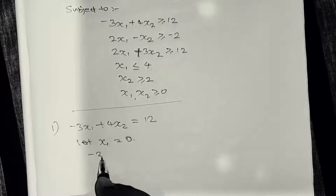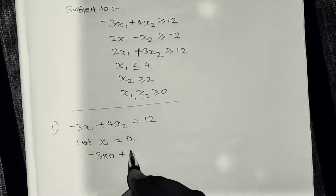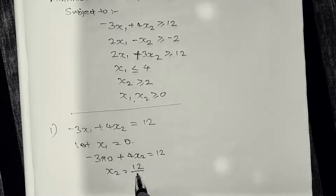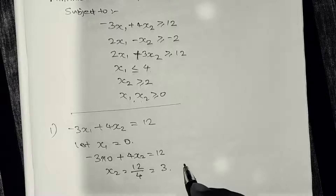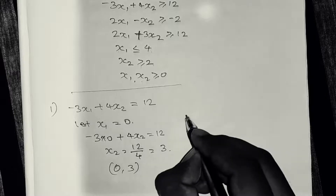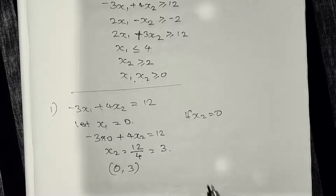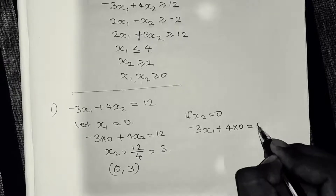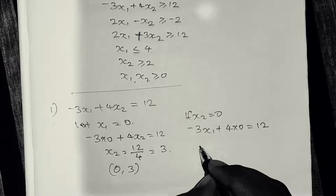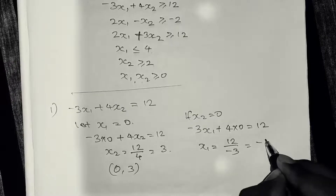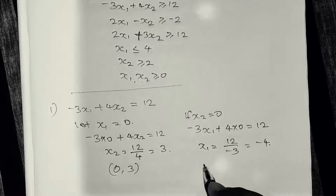When x1 equals 0: minus 3 times 0 plus 4x2 equals 12, so x2 equals 12 divided by 4, which equals 3. So we get the point (0, 3). When x2 equals 0: minus 3x1 equals 12, so x1 equals 12 divided by minus 3, giving x1 equals minus 4. So the second intercept is (minus 4, 0).